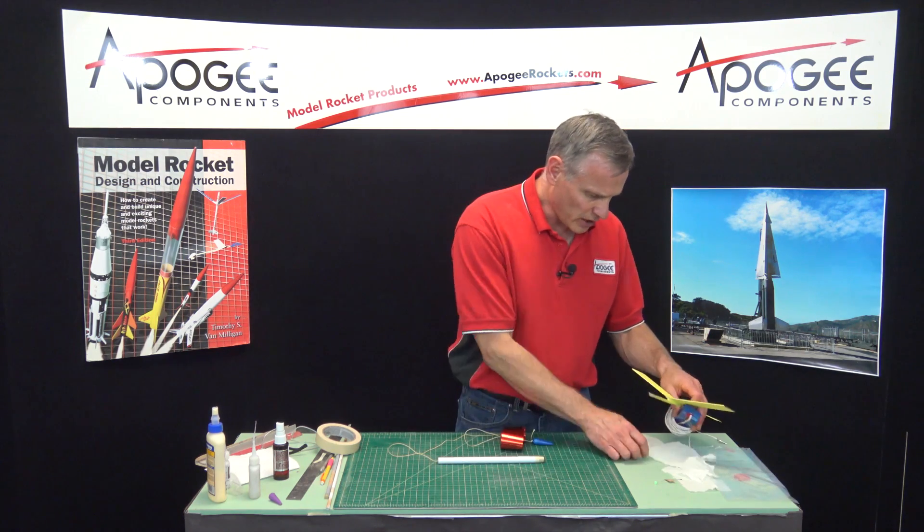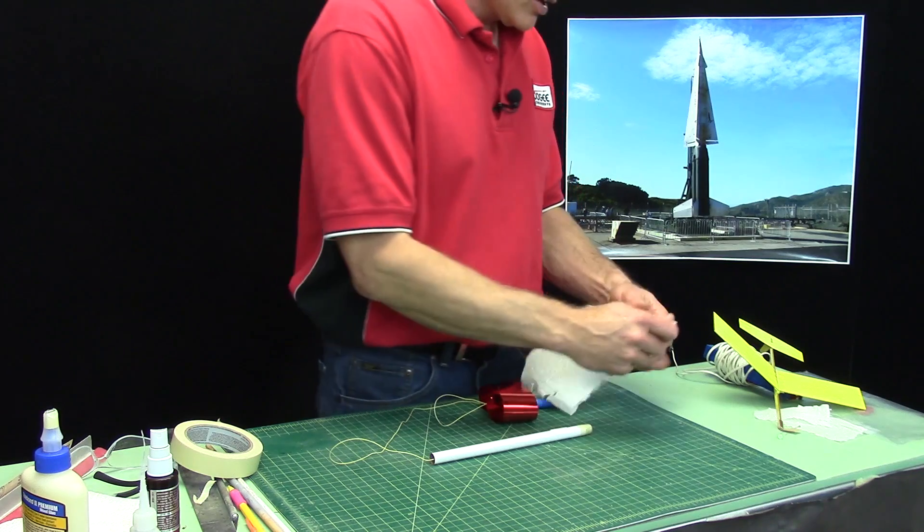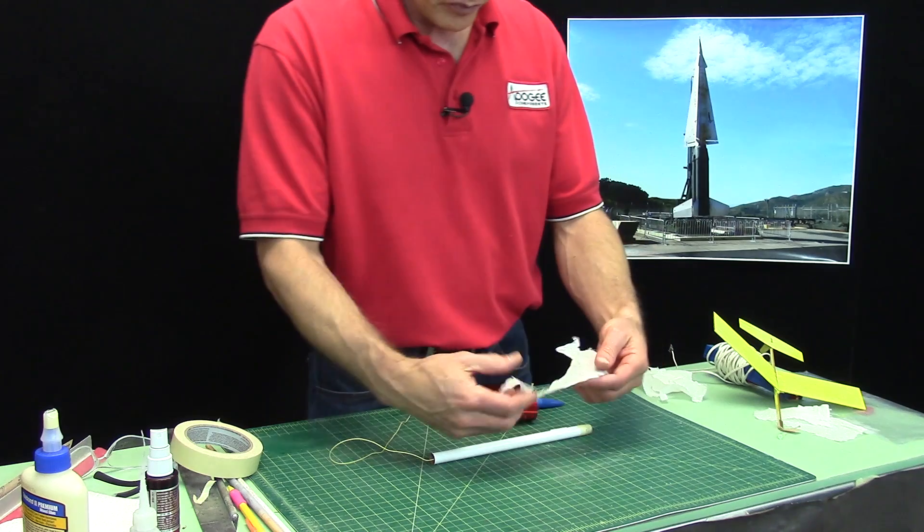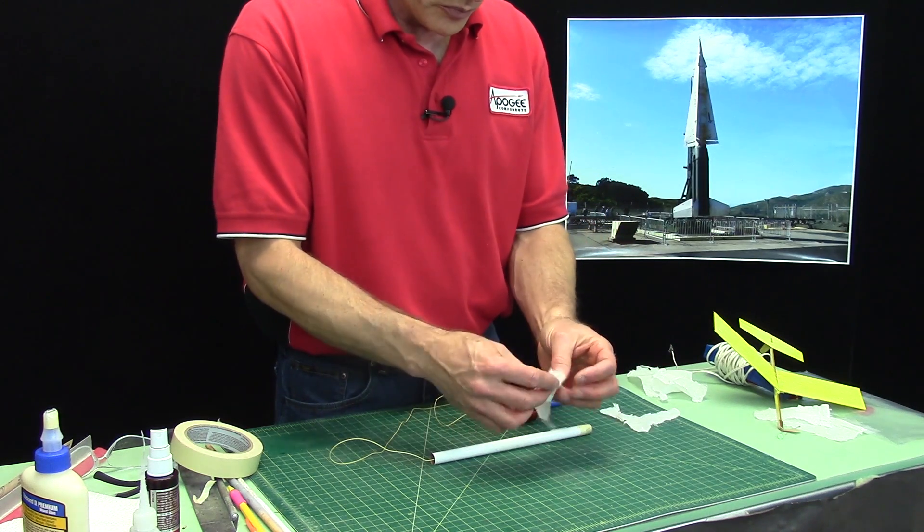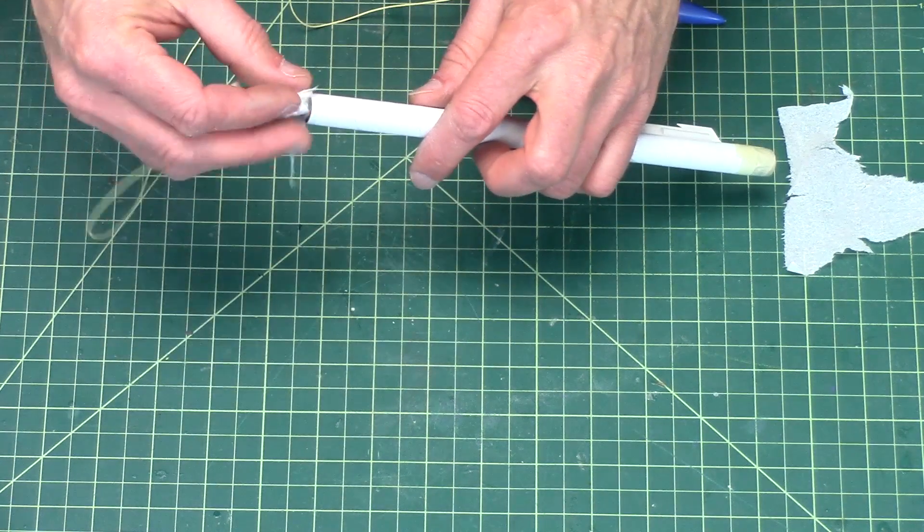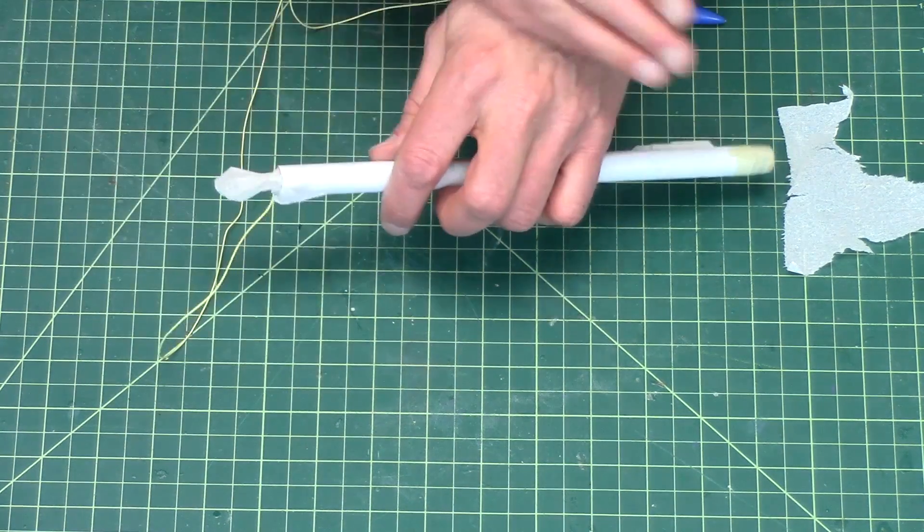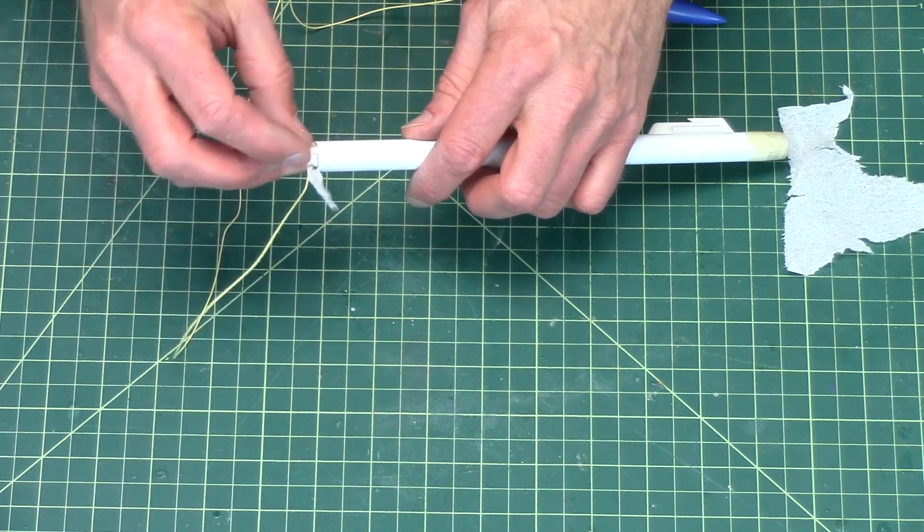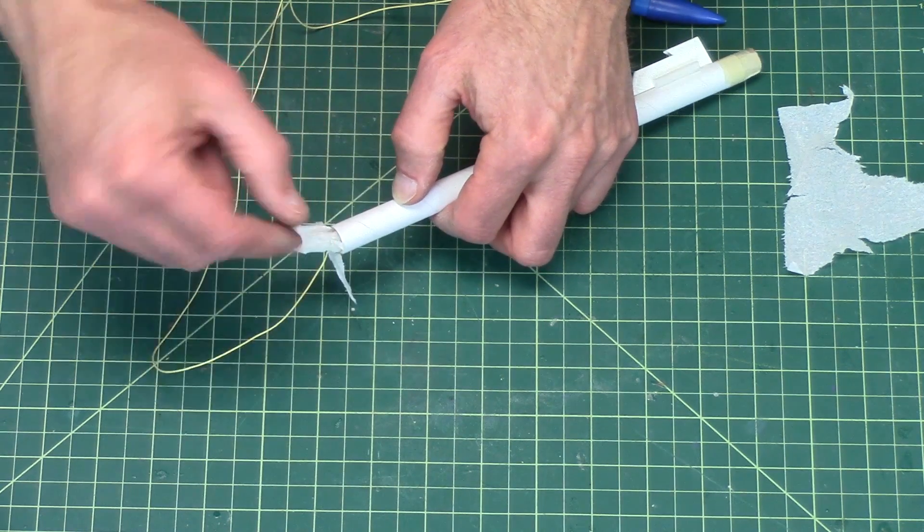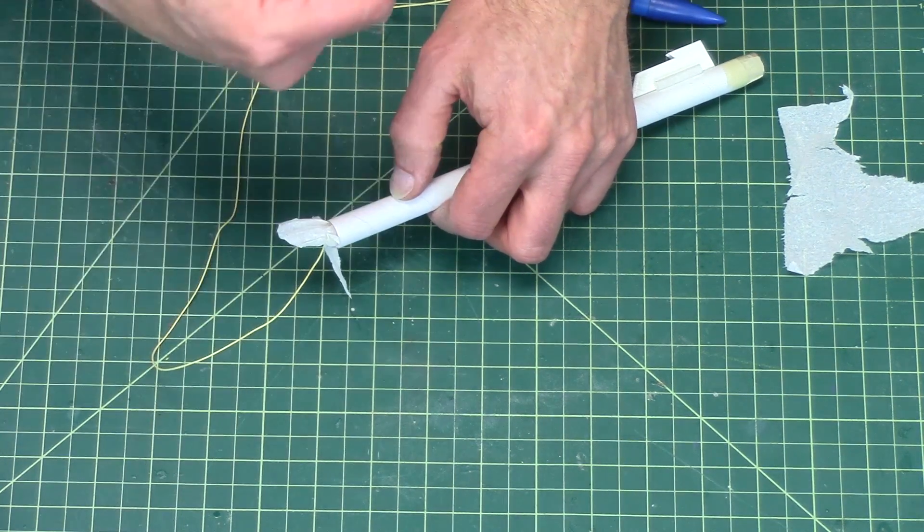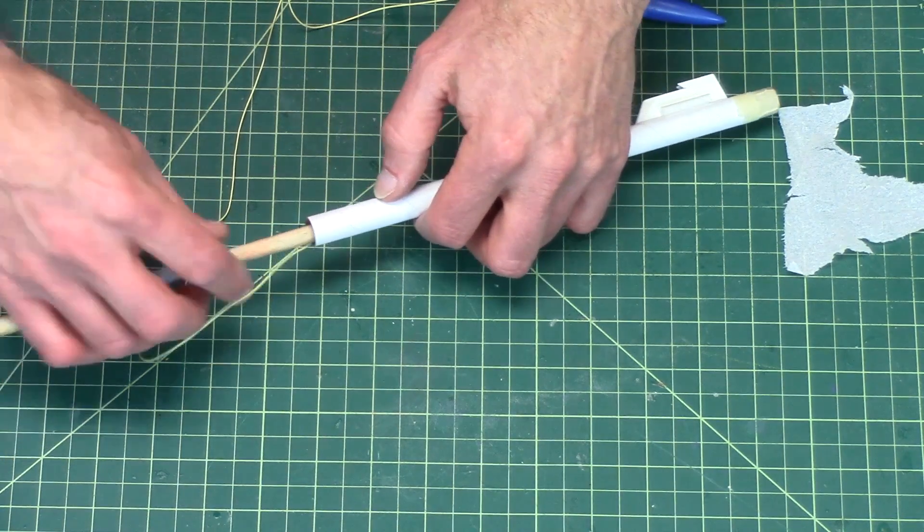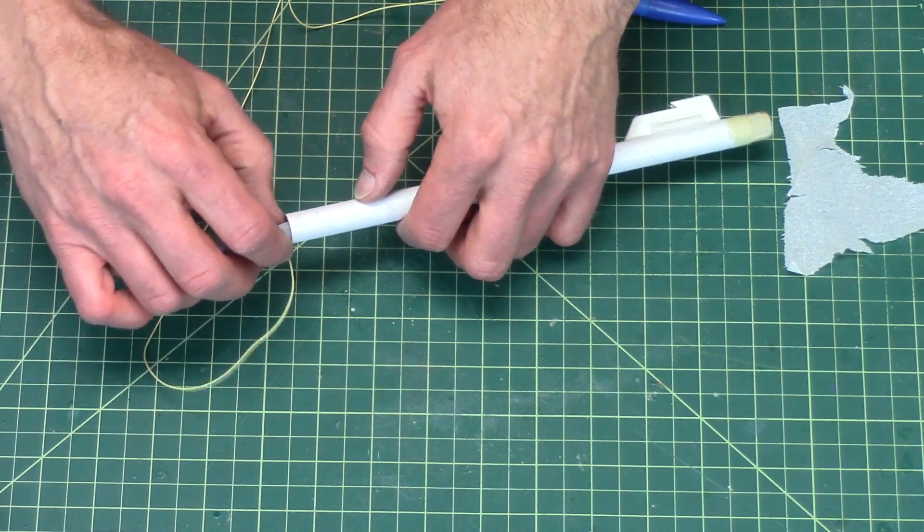You'll want to take a piece of wadding, it only takes about three-quarters of a sheet, and you want to loosely roll it up. Don't ball it up real tight, nice and loose, because we want to fill the tube up with approximately a body tube diameter or two. If you ball it up too tight then the ejection gases can get around the side.